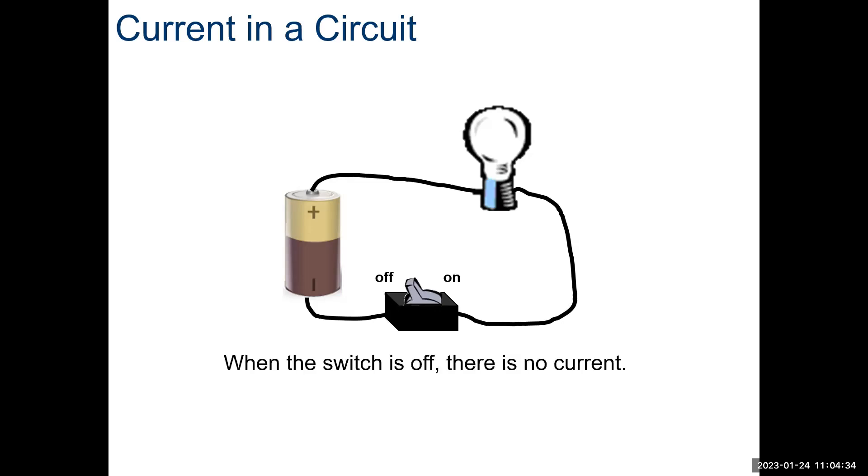If there's a circuit, and that circuit has a path, then electricity will flow. And when electricity flows, that's when we can use it. It can light a light.